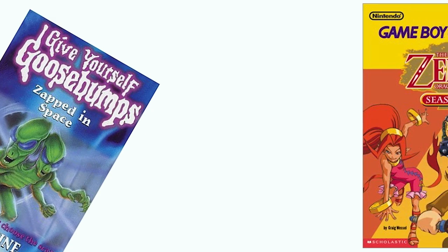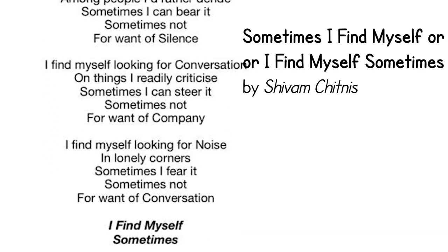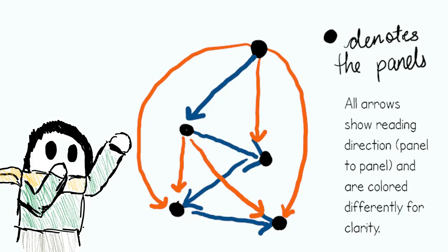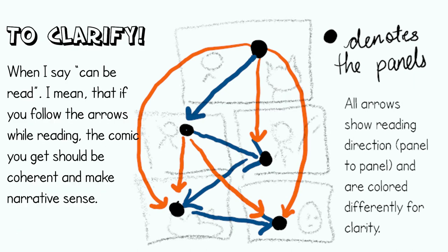This idea has its precedence in like, choose-your-own adventure stories and those poems you can read forwards and backwards. This thing that we have just made is called a directed graph. These are also called quivers because, you know, they're collections of arrows.